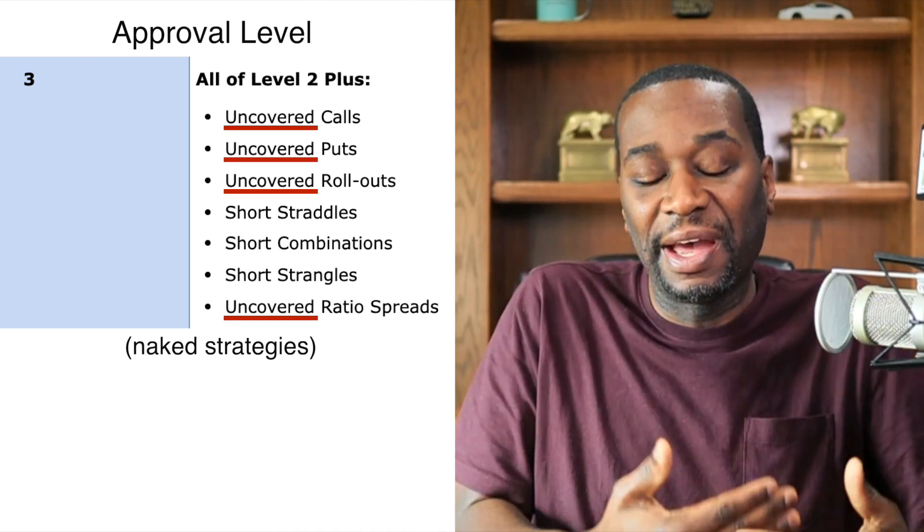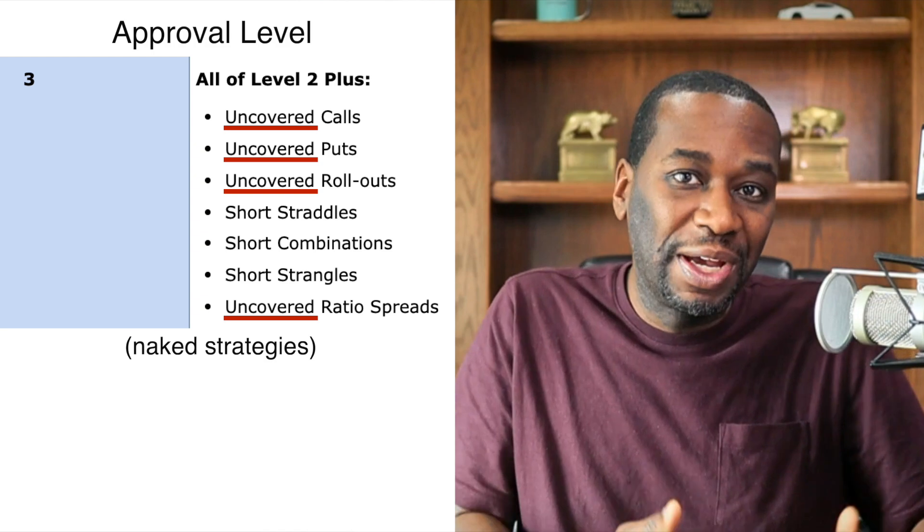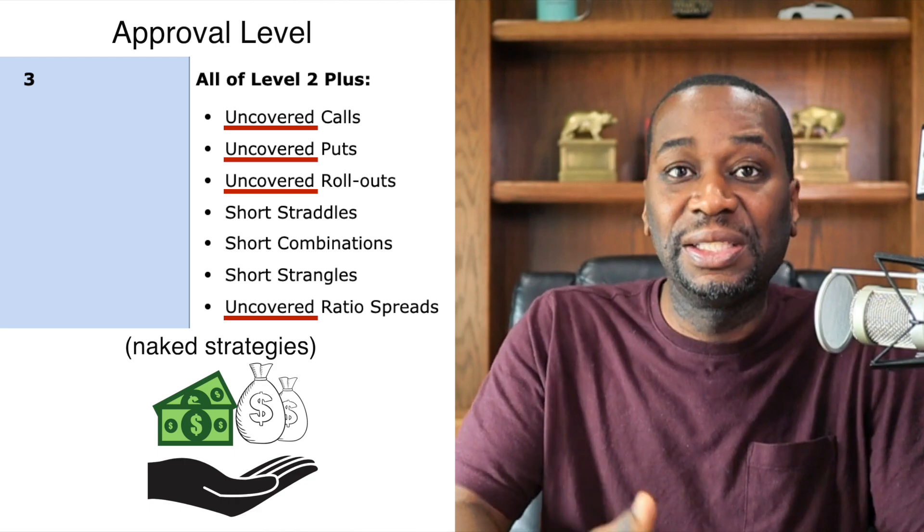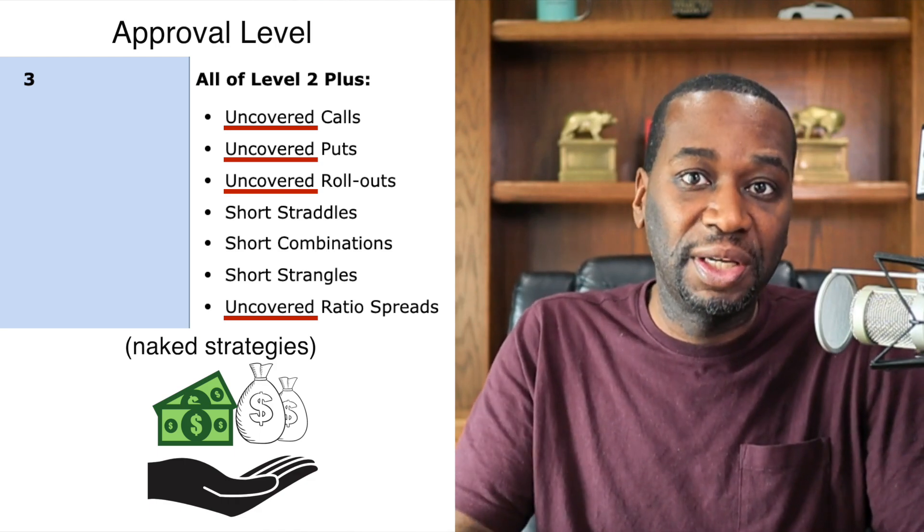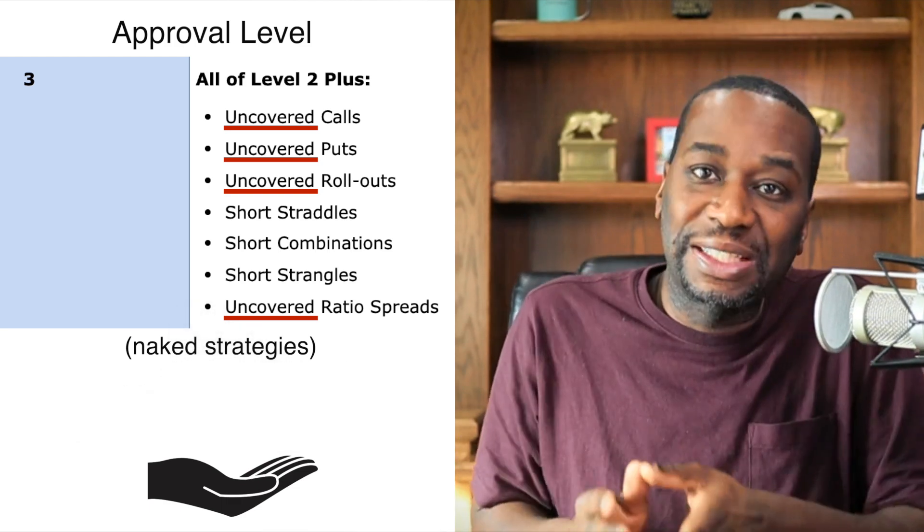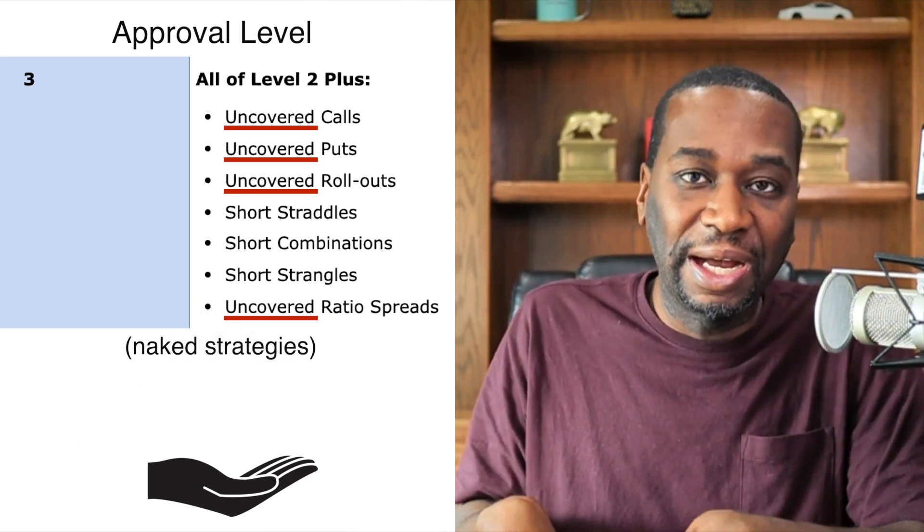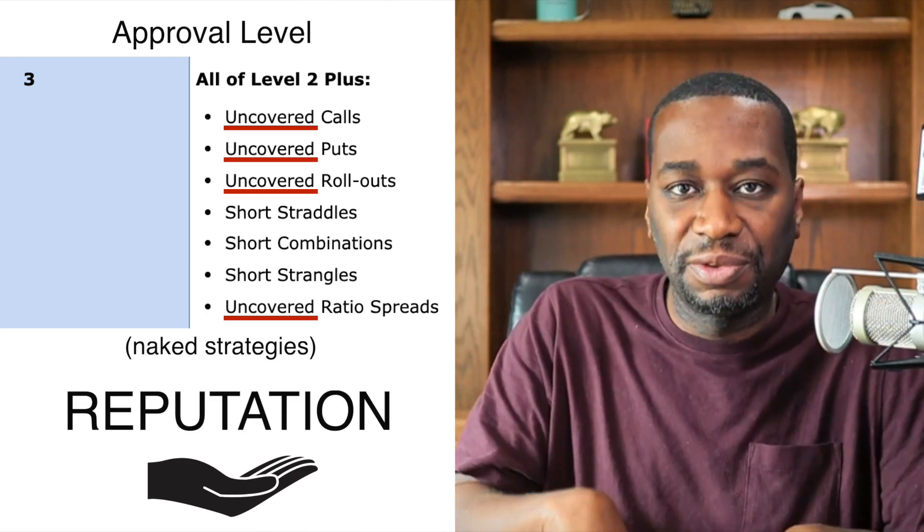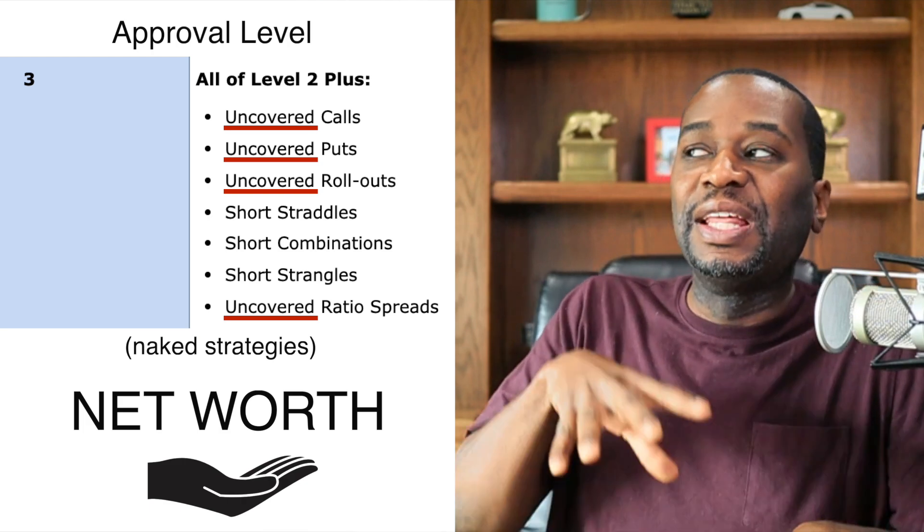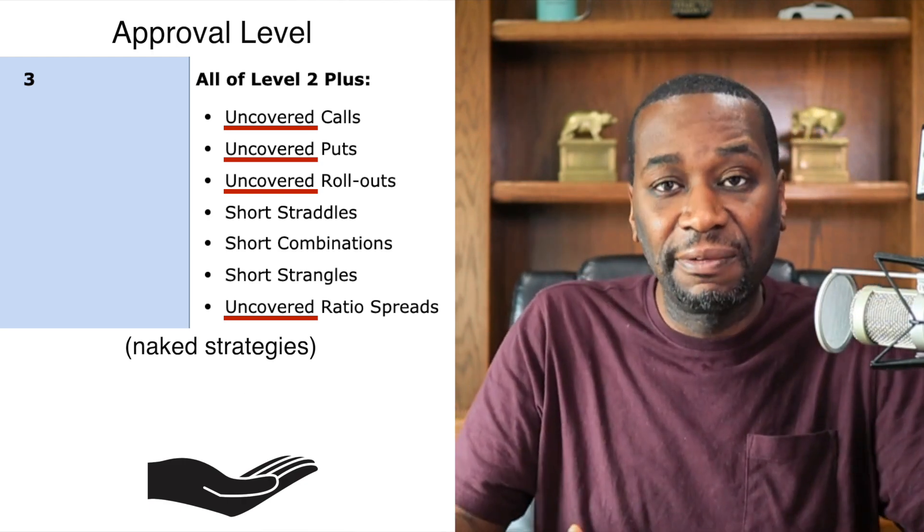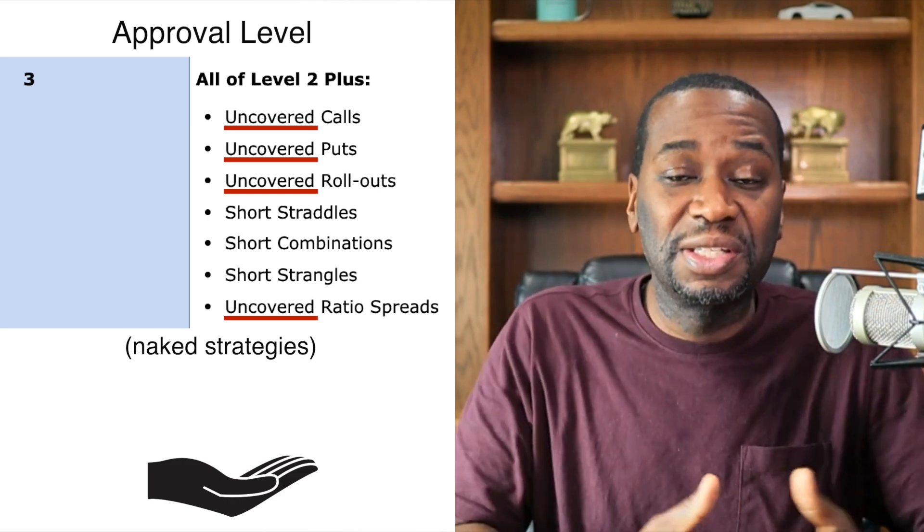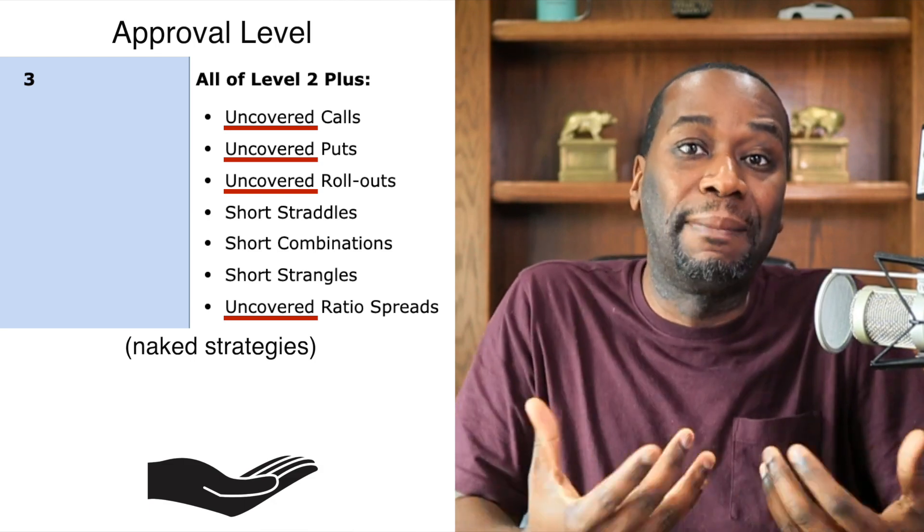The biggest difference is that now they've put the word 'uncovered' in front of everything, which just simply means you have a net worth or you have a reputation with that broker that they will allow you to place these certain type of advanced trades and not actually have the stock, and you may not even have to actually have the money in your account. But because of your reputation with them, because of your long-standing history, or because they know your net worth, they will allow you to do these trades uncovered because they know that if something goes wrong, meaning the trade doesn't go how you expected it to and you have to come up with the money, they believe that you are good for it.